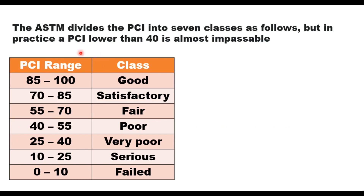In practice, a PCI value lower than 40 is almost impassable. 85 to 100 is a good class, 70 to 85 is satisfactory, 55 to 70 is fair, and 25 to 40 is very poor. These lower ranges represent unacceptable levels of road condition.